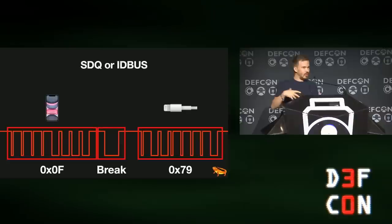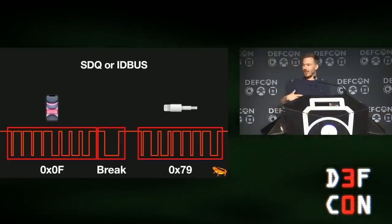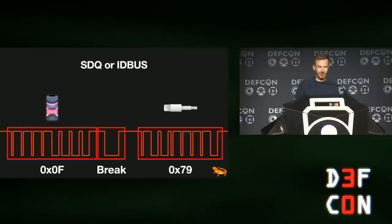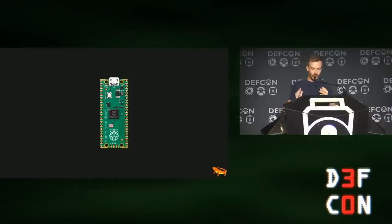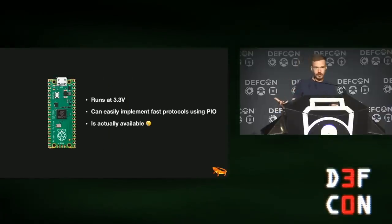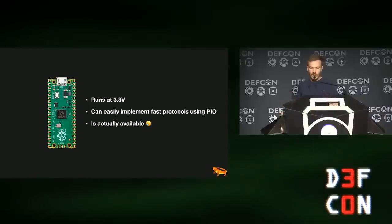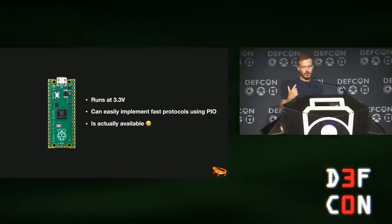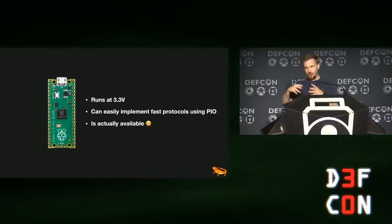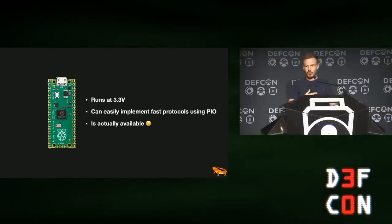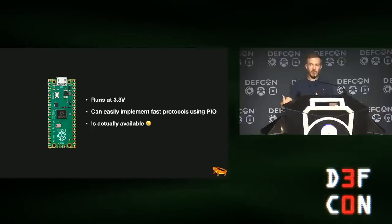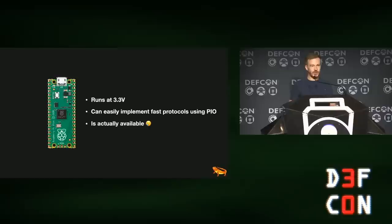A lot of people implement this on FPGAs, but I like to go very cheap, so there's only one option for me: the Raspberry Pi Pico. It's just $4, not $20 or $100. It's super well suited for this because it runs at 3.3 volts, which is exactly the voltage we need. And it has something called programmable IO - a feature that lets you easily implement protocols directly in hardware. It's basically a small state machine CPU core with its own instruction set, and you can implement SDQ in hardware on this thing. Best of all, you can actually buy it because it's not affected by the chip shortage.